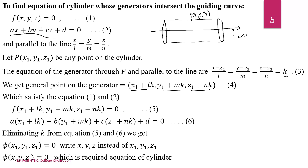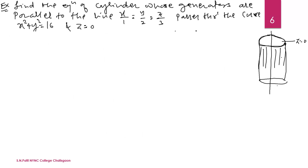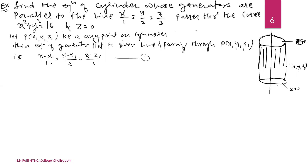Let us see an example on the cylinder whose generators intersect the guiding curve. We have to find the equation of the cylinder whose generators are parallel to a line and pass through the curve — specifically, the circle X² + Y² = 16 and Z = 0 (the XY-plane). We consider P as any point (X1, Y1, Z1) on the cylinder. Then the equation of the generator through P with direction ratios 1, 2, 3 is: (X − X1)/1 = (Y − Y1)/2 = (Z − Z1)/3.